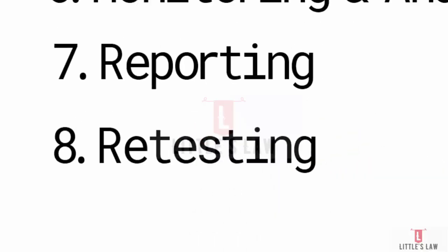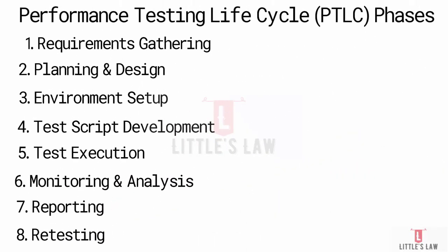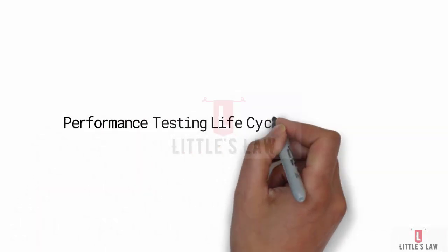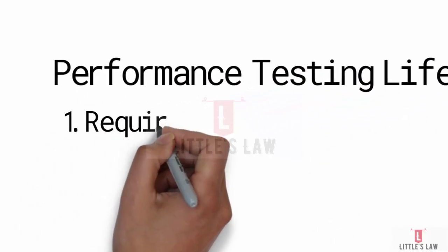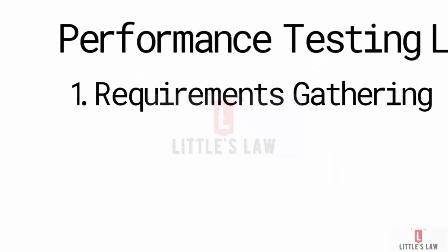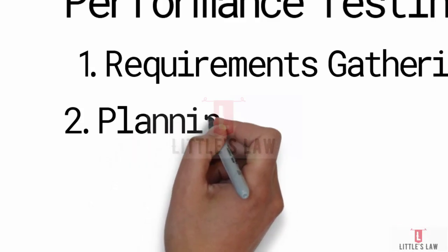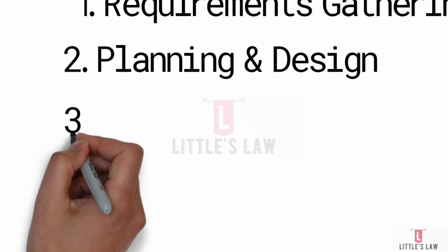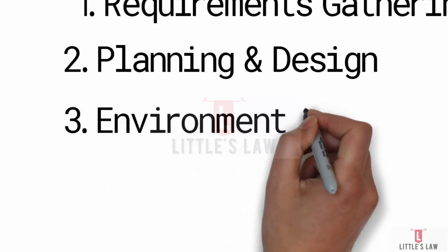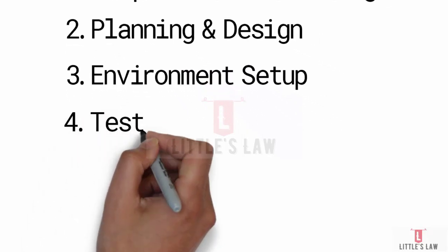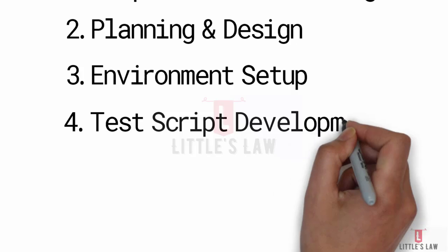I'll take you through each and every phase of the performance testing lifecycle. The first phase is requirements gathering, and the objective is to understand the performance requirements and goals. During requirements gathering, we identify the performance goals — we define what aspects of performance need to be tested, for example response times, throughput, or resource utilization.